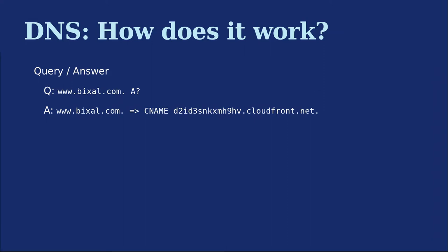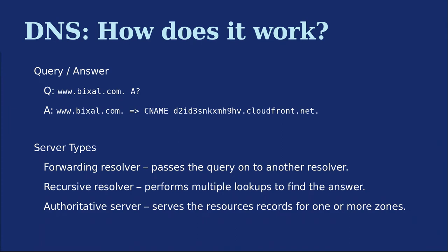The answer that comes back is: the canonical name for www.vixel.com is something at cloudfront.net. The query is sent to whatever local resolver you have, which sends it to something else. There are three major kinds of DNS servers. A forwarding resolver — probably something you have in your router at home — takes whatever query it gets, forwards it upstream, waits for the answer, and returns it. It'll oftentimes cache something, so it doesn't have to look it up again. It'll keep it for five minutes or a day, whatever the time-to-live is set to.